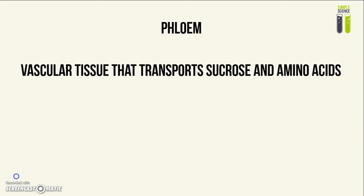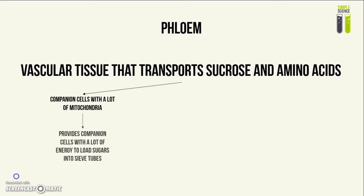And then we have the phloem. It's a vascular tissue which transports sucrose and amino acids around the plant. It has companion cells with a lot of mitochondria, and this is so that it can provide the companion cells with a lot of energy in order to load sucrose into the sieve tubes.